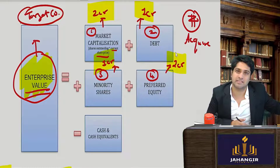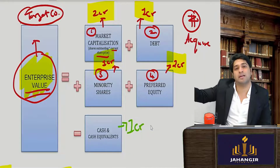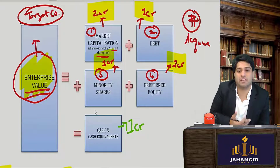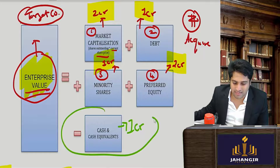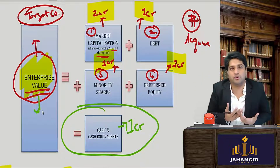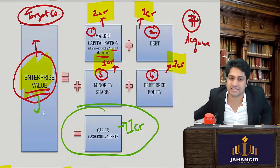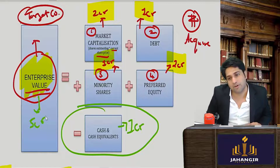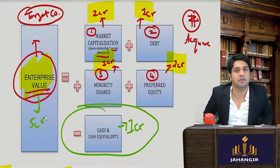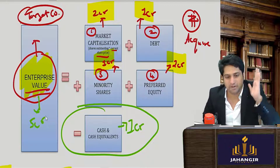When I buy out, I'm going to see that the target company already has cash of one crore in its bank account. Now, do I need six crores? No — I require only five crores, because this cash becomes mine. I will use it to pay off obligations. So the enterprise value, from the acquirer's point of view, is what it costs to buy the target company — and since the cash reduces my purchase cost, cash and cash equivalents are subtracted. Is this concept clear?